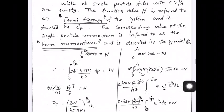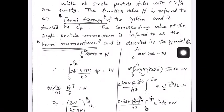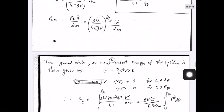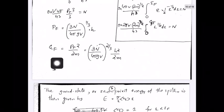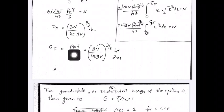The corresponding value of the single-particle momentum is referred to as the Fermi momentum, denoted by pf. The Fermi energy εf and Fermi momentum pf are related by εf = pf² / 2m.